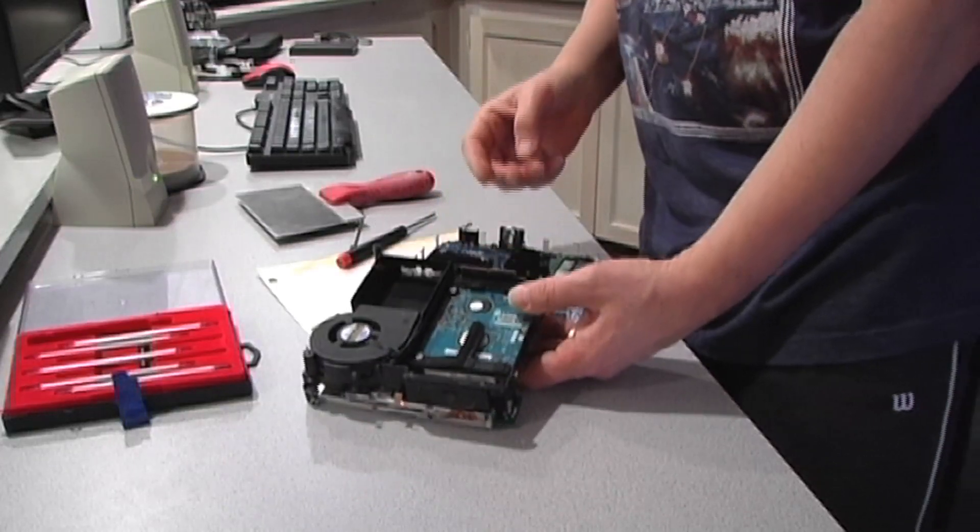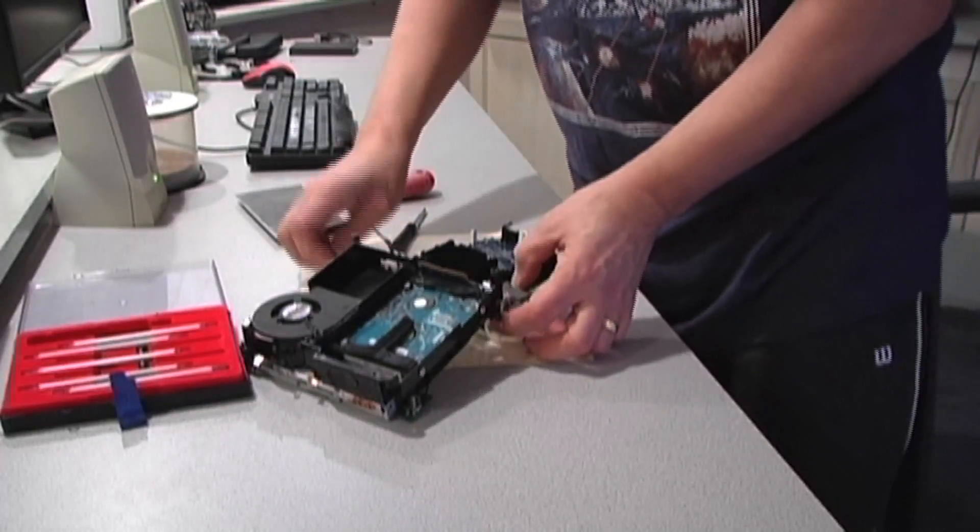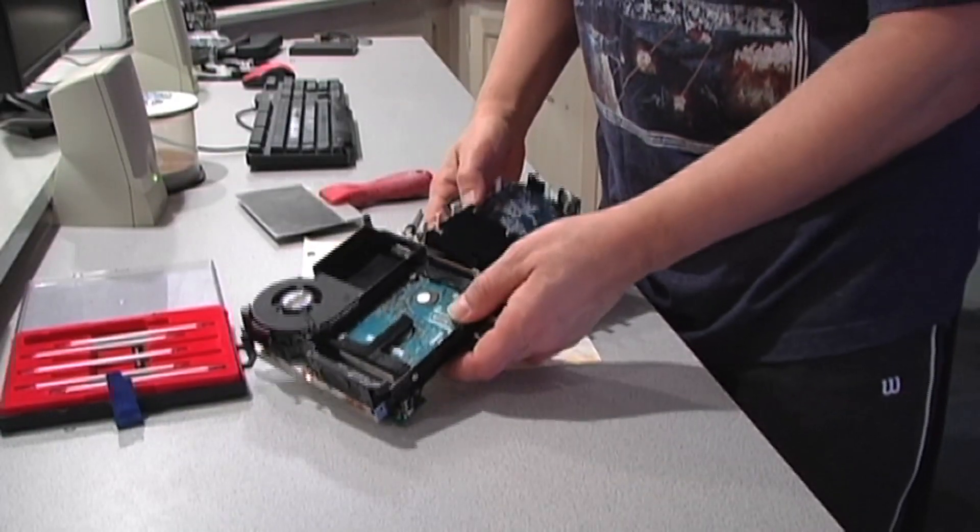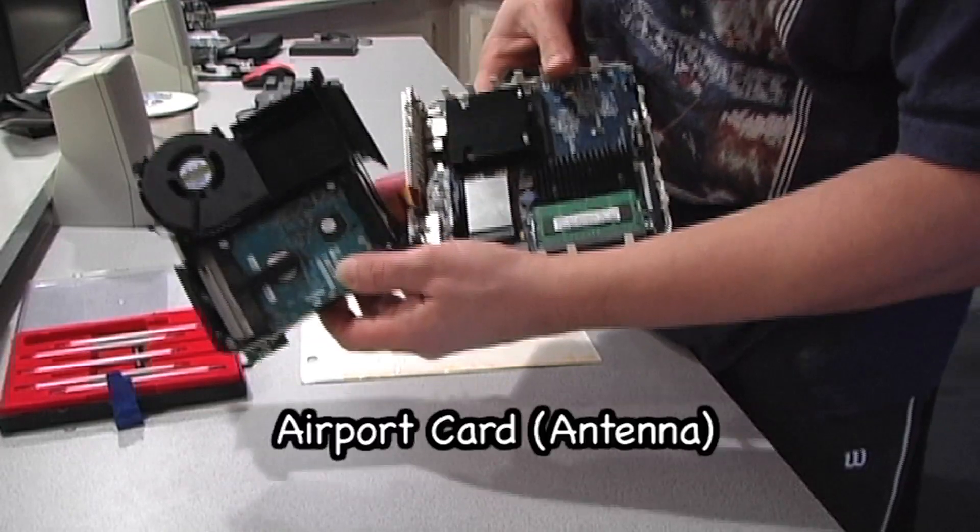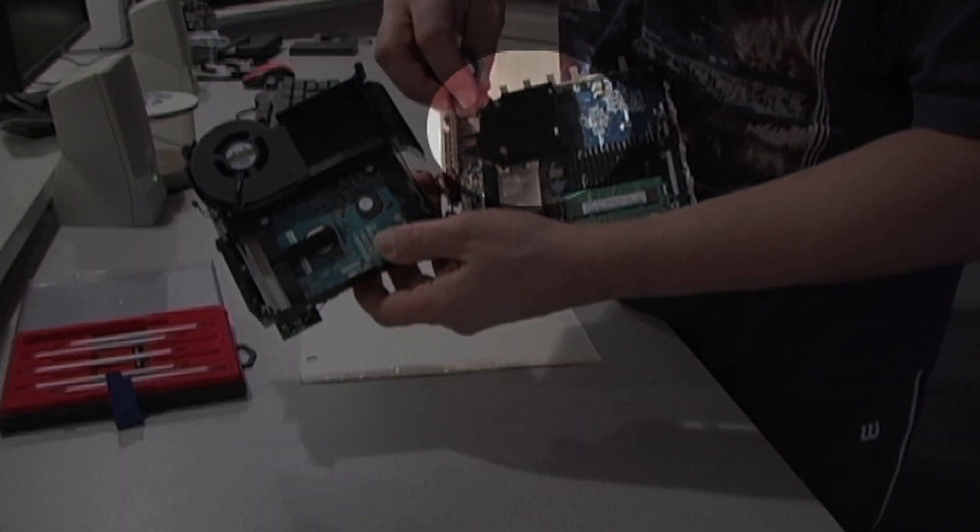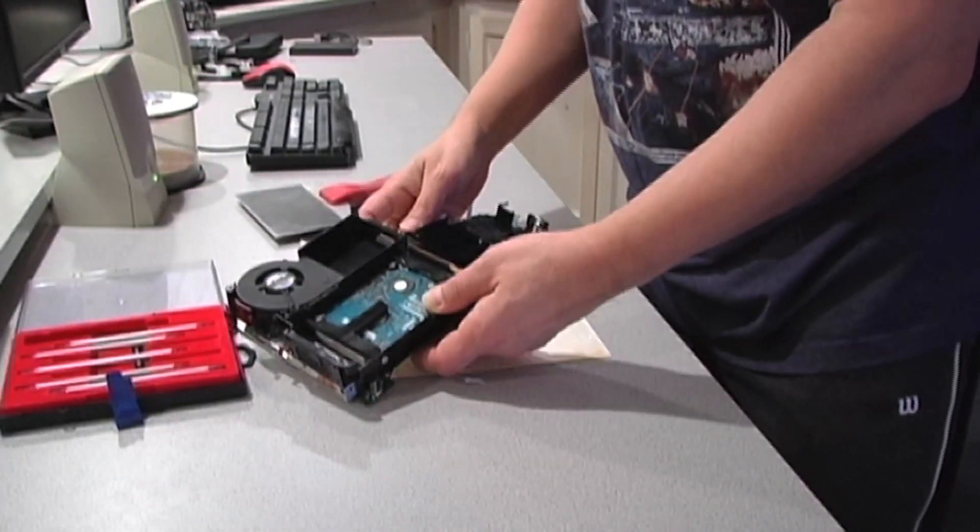Your antenna does come off. Right here is where your antenna reconnects. Just push it in once you assemble everything back together. I put it back in the tray there with the other one.